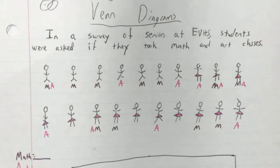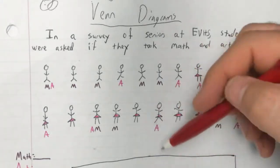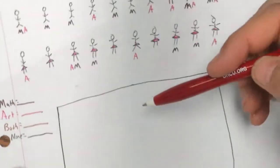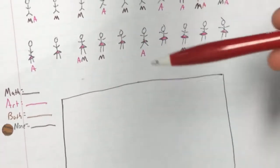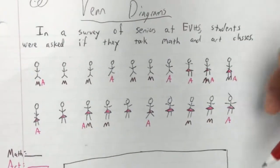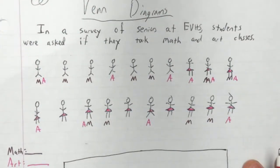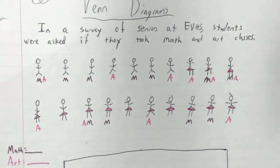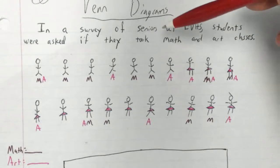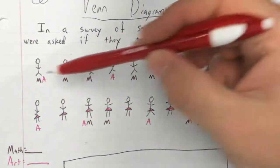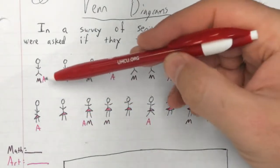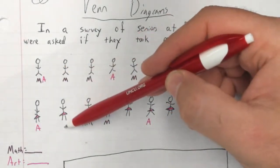So let's take a simple example here and then from this example we're going to create our Venn diagram and then start coming up with probabilities based on that. I gave a survey to seniors at EVHS. By the way, this is a fictitious survey, I didn't actually do this, I made it up for the point of this example. Students were asked if they took math and art classes and I drew out all of my people. I've got my boys up here, my girls down here, and told you whether or not they were in math, art, both, or neither.